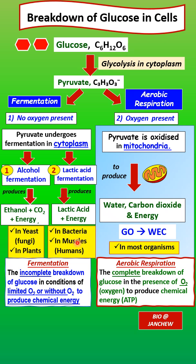In lactic acid fermentation, this process occurs in bacteria and in the skeletal muscle cells of humans undergoing vigorous activity. In lactic acid fermentation, pyruvate is broken down to form lactic acid with the production of energy.